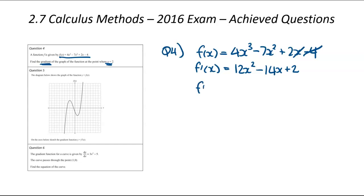So f dash 2 is going to be equal to 12 of 2 squared, so we're substituting in 2, minus 14 times 2, plus 2. 12 times 2 squared is 12 times 4. So that's 48. Minus 14 times 2, 28, plus 2.